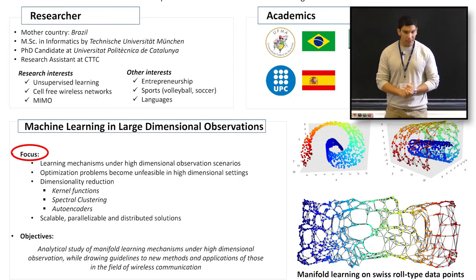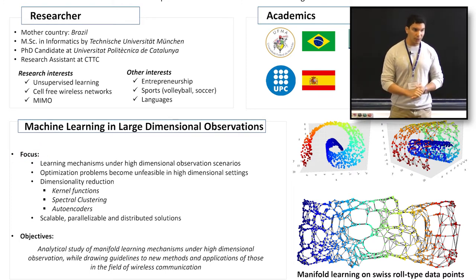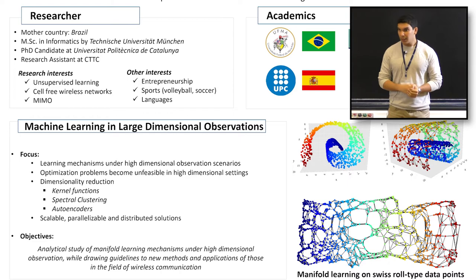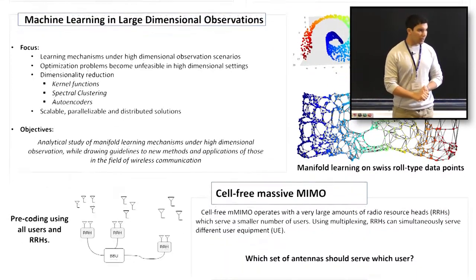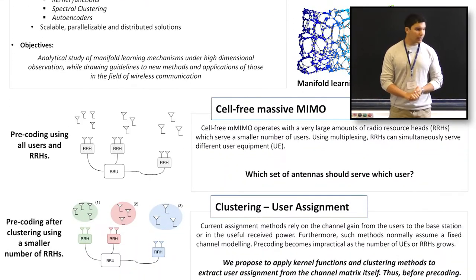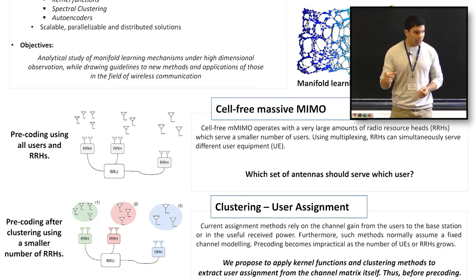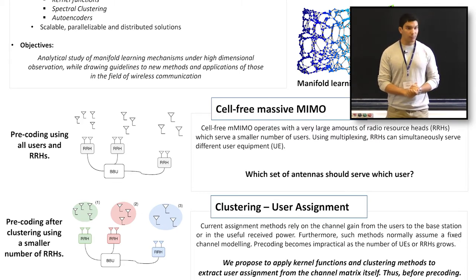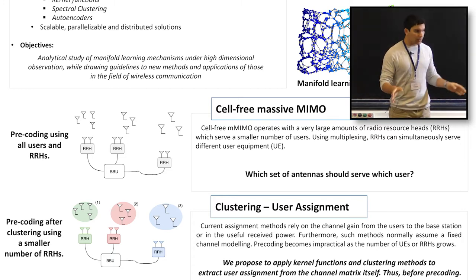Currently we are trying to reduce the dimensionality — trying kernel functions, doing some clustering. One specific problem we are looking into right now is cell-free massive MIMO and user to base station allocation and assignment.